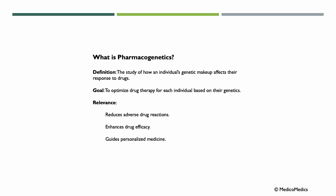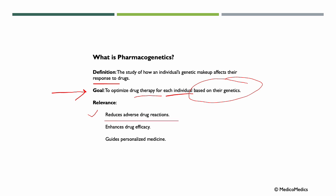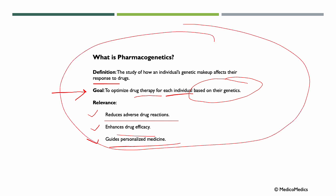Pharmacogenetics is the study of how an individual's genetic makeup affects their response to drugs. The goal is to optimize drug therapy for each individual based on their genetics. Its relevance is to reduce adverse drug reactions, to enhance drug efficiency, and to guide personalized medicine. So, pharmacogenetics studies how your DNA affects the way medicines work in your body, like customizing a treatment plan just for you.